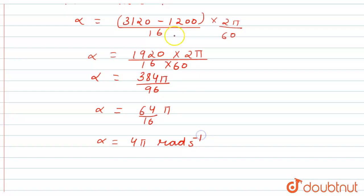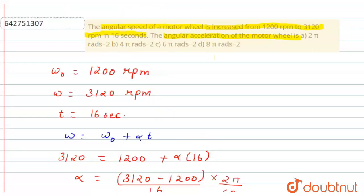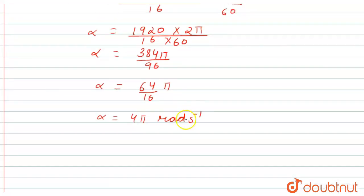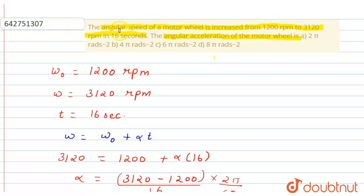So now according to this explanation, which option is correct? 4π radians per second square. Our answer is per second square because this is acceleration. Here we can write minus 2. This is in option B, so we can write the final answer: option B is the correct option.